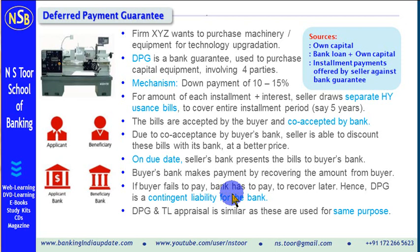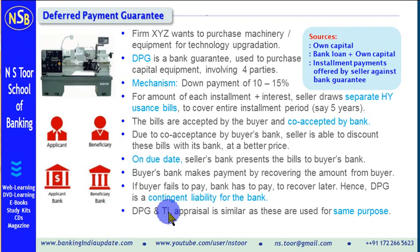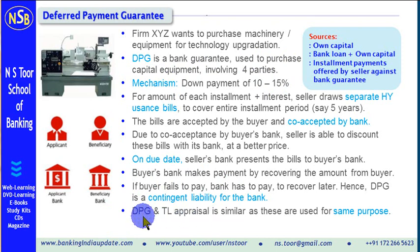If we look carefully, Deferred Payment Guarantee and term loan are given for almost the same purpose, that is to purchase capital equipment. Hence, the appraisal of loans in case of DPG or term loan is similar, because these are issued for the same purpose — purchase of capital equipment.